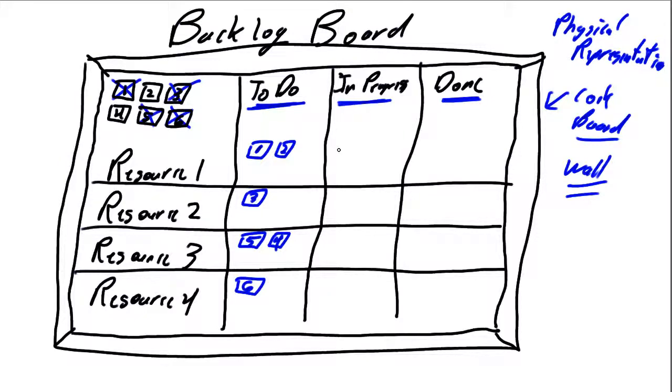So, we declare the sprint started and the work moves over to the in progress. Resource number one begins working on that one. Resource number two begins working on that one. And so on as we go down the process. And the team begins to do the work on the stories.